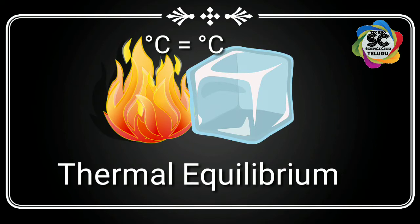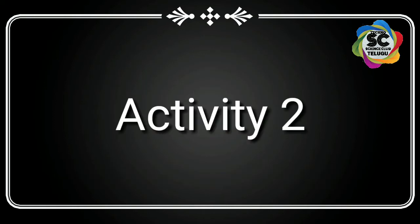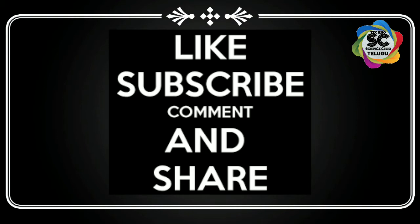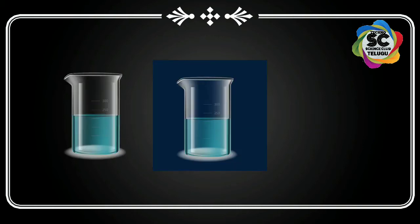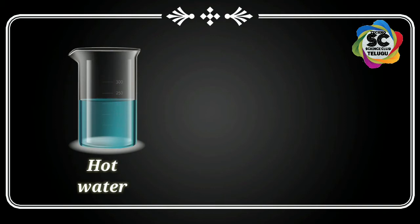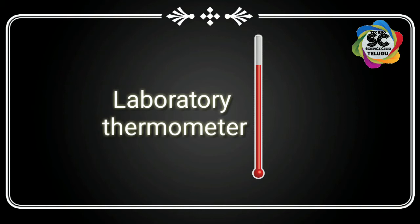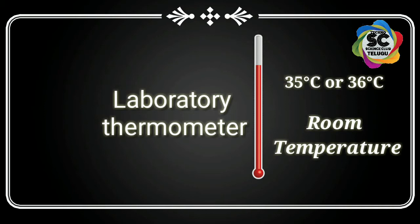At that position, the two bodies are said to be in thermal equilibrium. Let's do an activity from the 10th class textbook. The required materials are two glass beakers or two glass tumblers and a thermometer. Take two glass tumblers — one filled with hot water and another with cold water — and take a laboratory thermometer. Note down the normal reading of the thermometer, which is the room temperature.